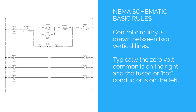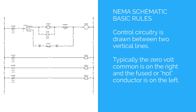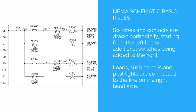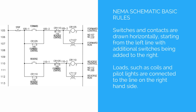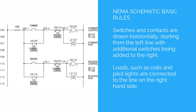NEMA schematic basic rules: control circuitry is drawn between two vertical lines. Typically the zero volt common is on the right and the fused or hot conductor is on the left. Switches and contacts are drawn horizontally, starting from the left line with additional switches being added to the right. Loads such as coils and pilot lights are connected to the line on the right-hand side.